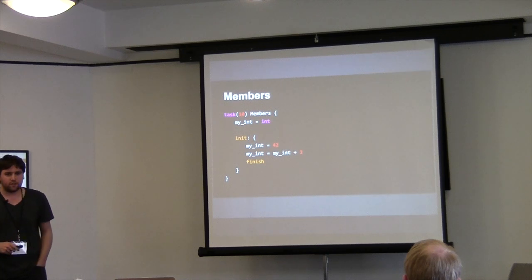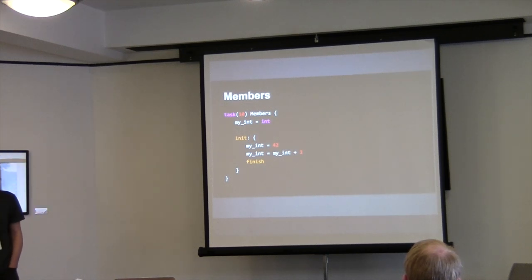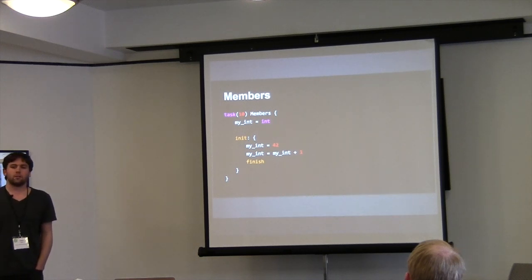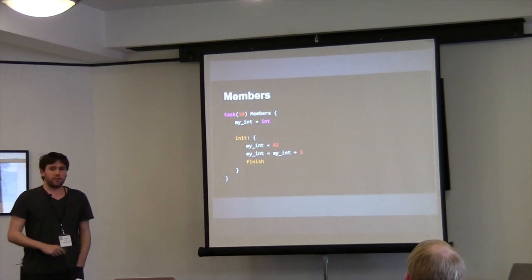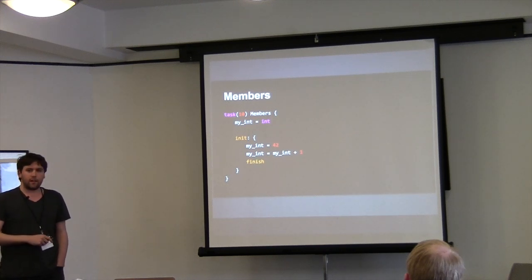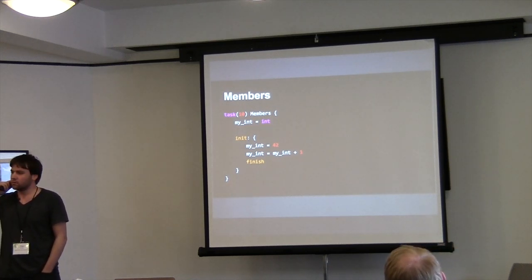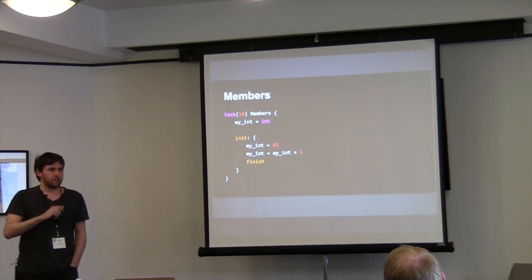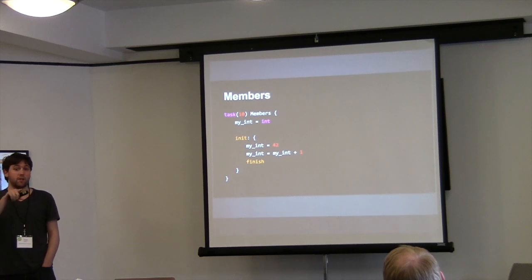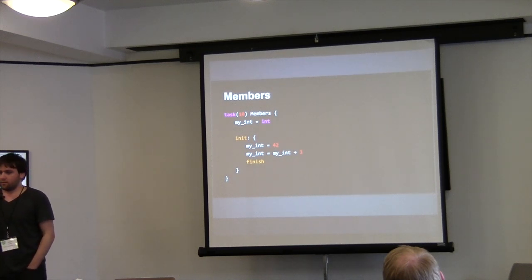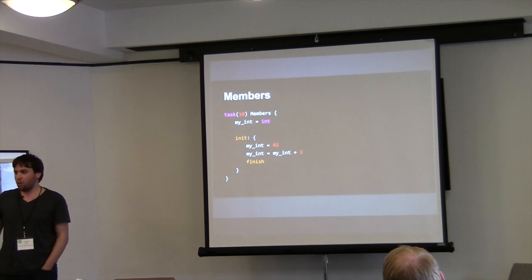We can have bindings called members in Doppel. They can have types. Let's assign our integer 42, add 1, and finish. There are some questions raised: who owns this? Is it synchronous? What if I want code to be executed every time I access this member? Is main local to the thread? And is there a race on my int? No, and the reason we will see later.